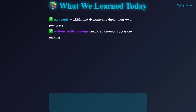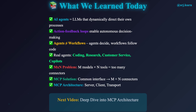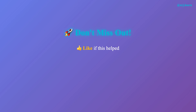Let's recap what we've learned. Agents are LLM-powered systems that dynamically control their own behavior using an action feedback loop — this is different from workflows where code controls the sequence of operations. Real-world agents are already deployed for coding, research, customer service, and many other domains. The M times N problem was blocking progress by requiring separate connectors for every tool-model combination, and MCP solves this with a universal protocol that transforms the problem from M times N to M plus N. In the next video, we'll dive deep into MCP's architecture and see how all the pieces fit together. If you found this helpful, please like and subscribe.